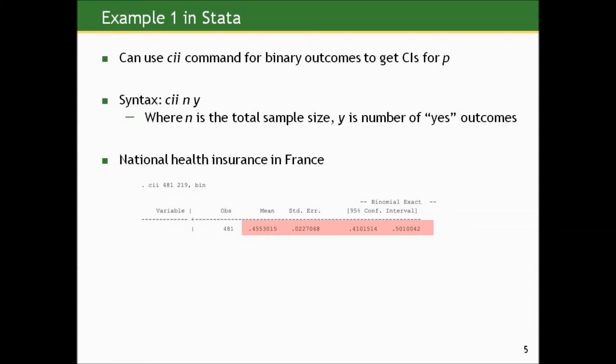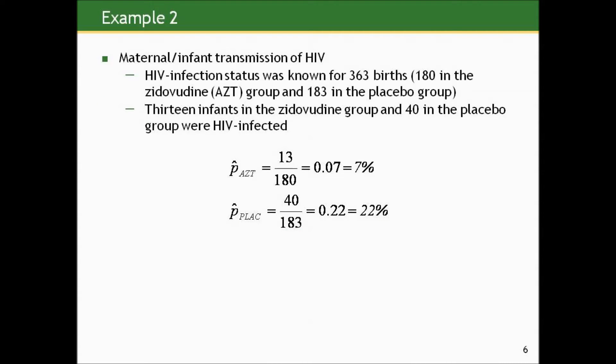So here's the results from that for the national health insurance example in France. Now just one note. Notice when that column that says mean, it gives us the proportion. And a proportion really is a mean. You can think of it as a mean because if we were to give each of the yeses a value of 1 and each of the noes a value of 0 and then average them, we would, in fact, get that sample proportion. And then it gives the standard error, which is estimated by the formula we gave of the square root of p-hat times 1 minus p-hat over N.